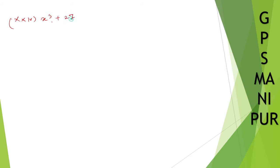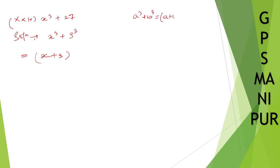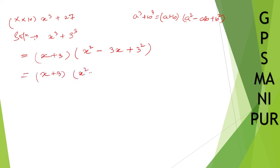Next question is Roman number 24: x cube plus 27. Solution: x cube plus 27 — I can write 27 as 3 cube. The formula for a cube plus b cube is (a + b)(a square − ab + b square). So writing it out: (x + 3)(x square − 3x + 9). That's all.